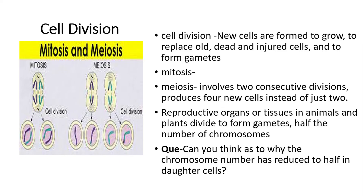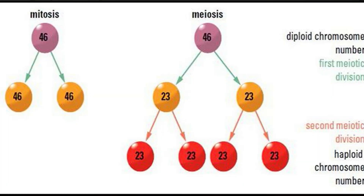Cell division can be either mitosis or meiosis. In mitosis, before one cell is converted into two daughter cells, the chromosomes inside the cell duplicate — one set becomes two sets, and each set goes into a daughter cell. For example, a human cell with 46 chromosomes (a diploid cell) is converted by mitosis into two cells each with 46 chromosomes. This process is used for growth and repair of the body.